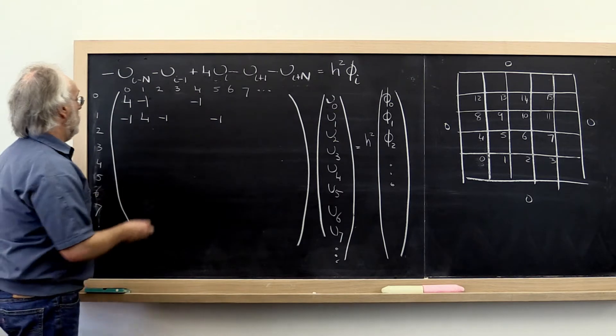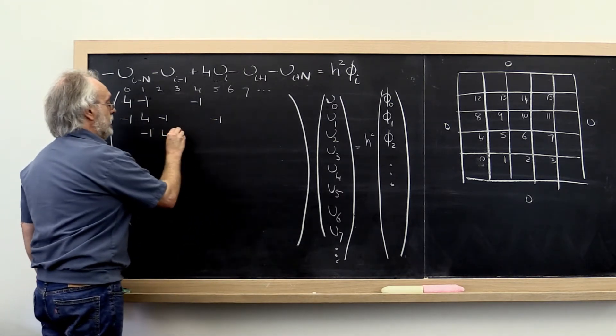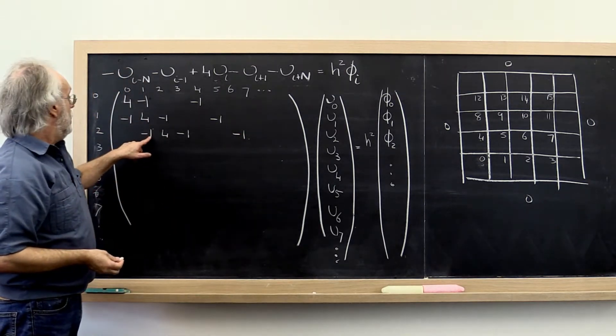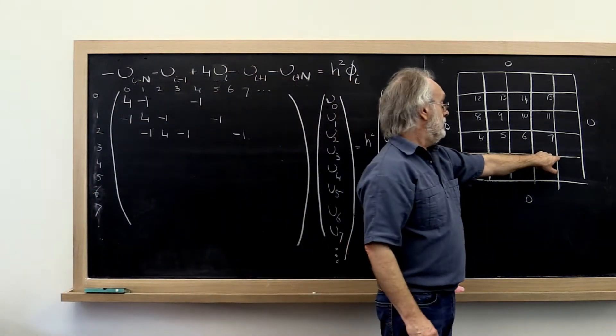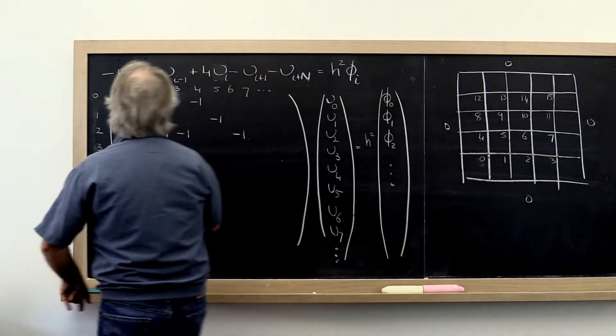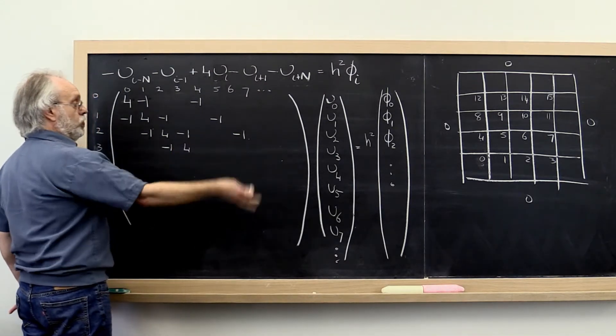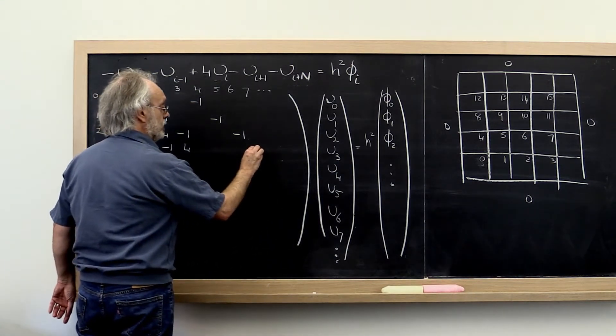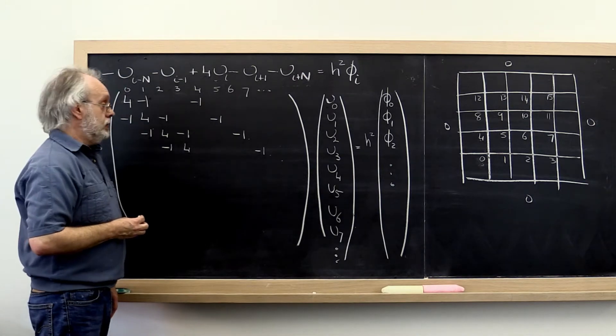We go to the next one and what we get is minus 1, 4, minus 1, and another minus 1 here. And then we end up being here on the end. And therefore we get still one more minus 1 and 4 here. But there is no point to the right. That's equal to 0. But we do have a point above.